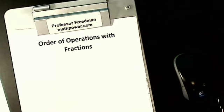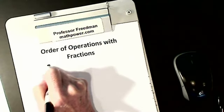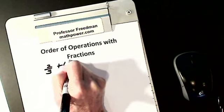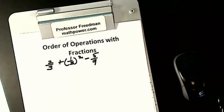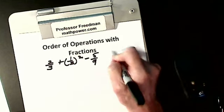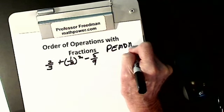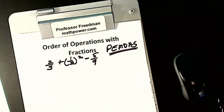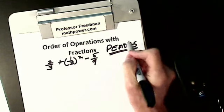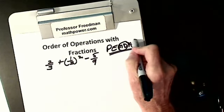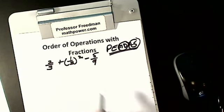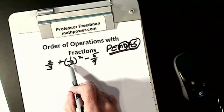Order of operations with fractions. Let's say I have two-thirds plus one-third squared minus five-ninths. Order of operations with whole numbers: PEMDAS — please excuse my dear aunt Sally. I have to do what's in parentheses first, then exponents, then multiplication or division as they appear left to right, then addition or subtraction left to right. In this case, there's nothing to do inside parentheses.